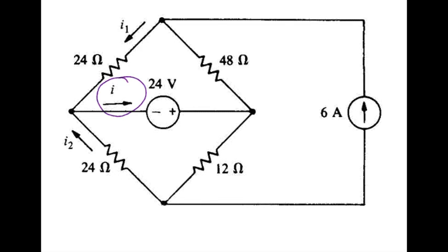In this problem, we're looking for the current I. We're supposed to use superposition method, and the hints were offered that it might be easier to find I1 and I2 first, and then sum those together to form I. So let's go ahead and give that a shot.